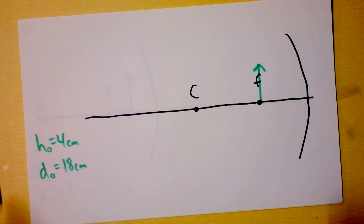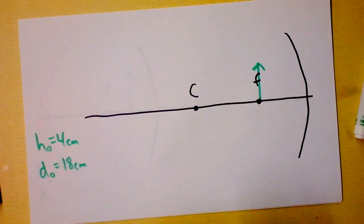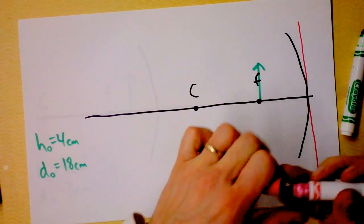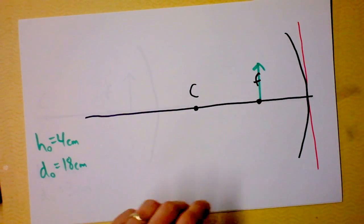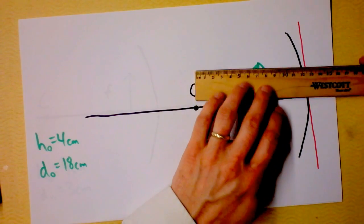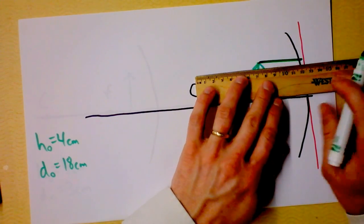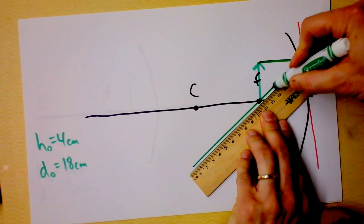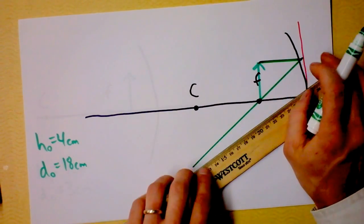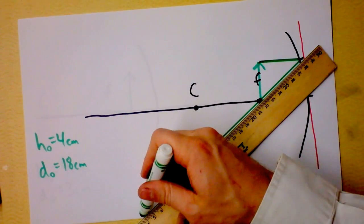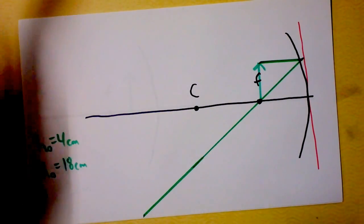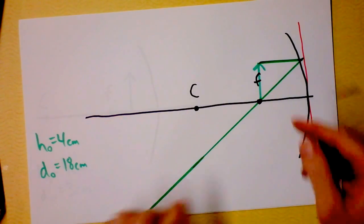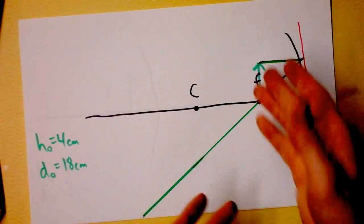Next puzzle: the object is at the focal point. We need a line of action first. The P ray comes in parallel, hits the line of action, and goes out through the focus. The F ray is supposed to go through the focus, but that can't really happen — it's never going to hit the mirror. So I'm not going to draw the F ray.